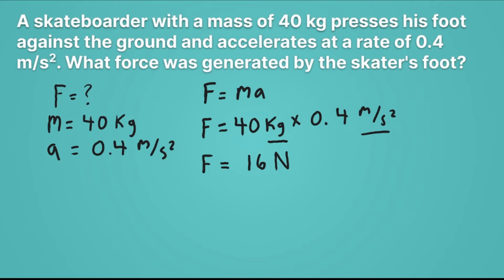So a newton is a stand-in for kilograms, meters per second squared. Last thing here, our numbers in this problem have one sig fig. The 40, just the 4 is significant. And in the 0.4, just the .4 is significant. So we want one sig fig. So we're going to go ahead and round this. And the six rounds our one up to a two. And so we'll get 20 newtons. So that's the force exerted by the skater's foot.